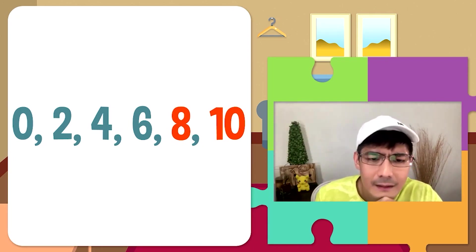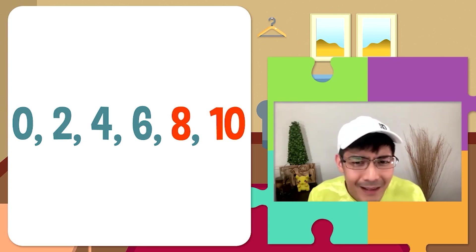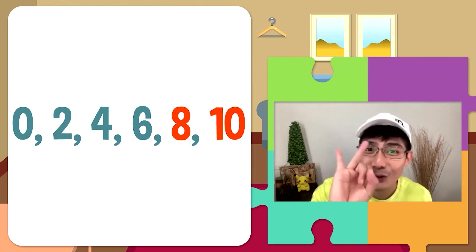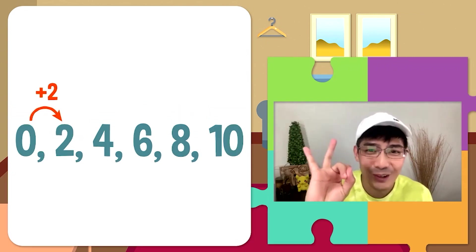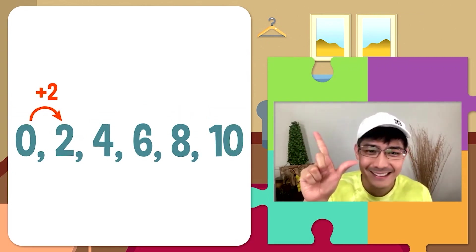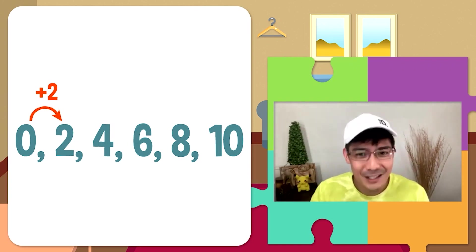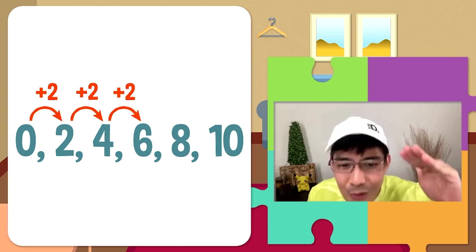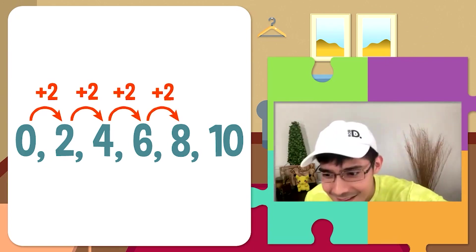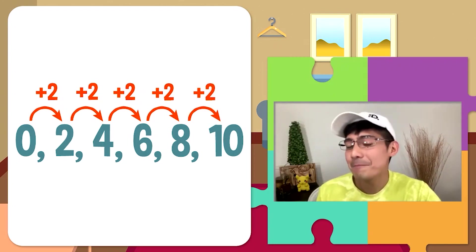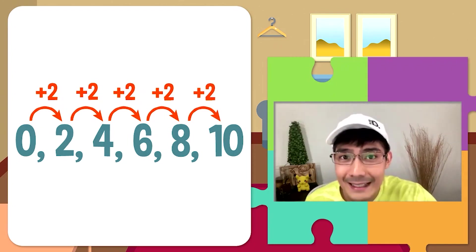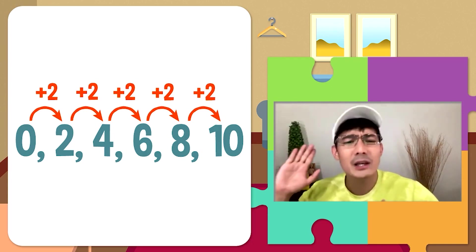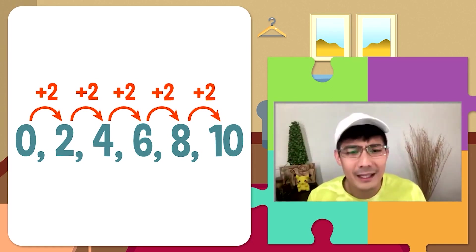Pero paano natin nakuha yung 8 and 10? Ang pattern natin ay nag-a-add tayo ng 2 sa sinusundang term: 0 plus 2 equals 2, 2 plus 2 is 4, plus 2 is 6, plus 2 is 8, plus 2 is 10, and so on. Kaya sa given number sequence, ang 5th term ay 8 at ang 6th term ay 10. At dahil nasolve na natin ang pattern sa unang room, diretso tayo sa next escape room natin.